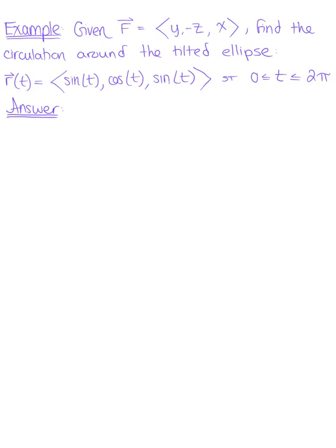Given the vector field f defined by the components y, negative z, x, find the circulation around the tilted ellipse parametrized by vector r of t, defined by the components sine of t, cosine of t, sine of t, such that t is greater than or equal to 0 and less than or equal to 2 pi.